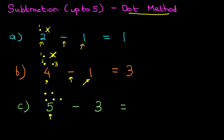Now how do we do this using the dot method? Well again, we start with the digit on the left — we have got 5. So let's draw 5 dots: 1, 2, 3, 4, 5. So we have got 5 dots because we have the number 5.